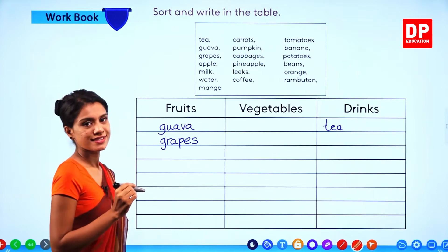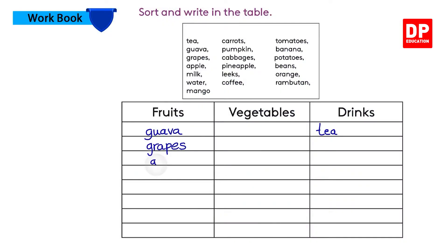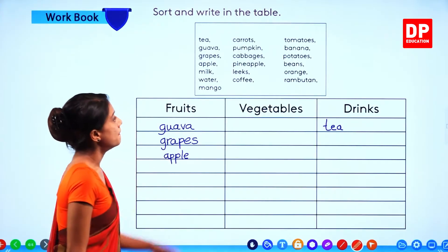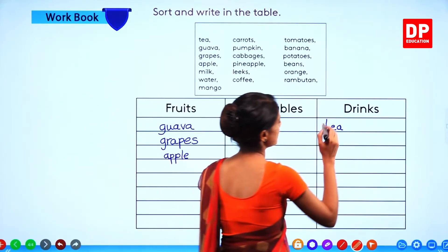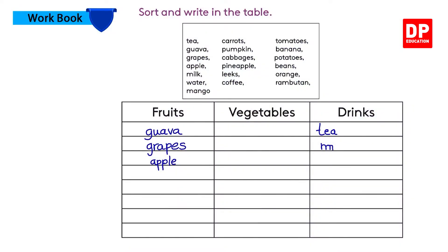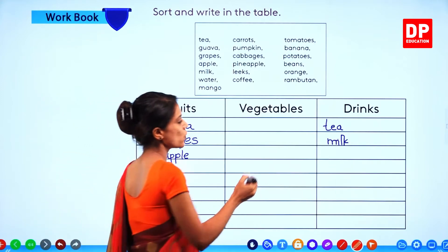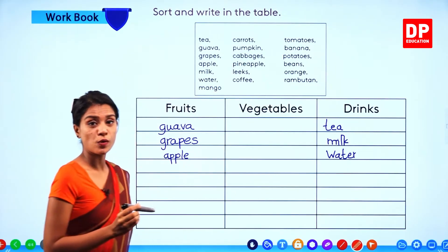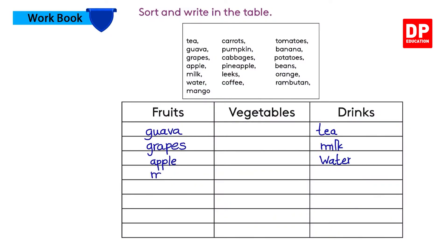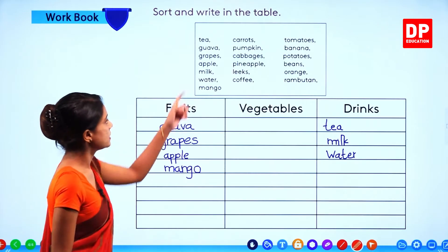Apple — apple is a fruit. Apple. Then milk. Milk — paal. Is it a fruit or vegetable? No. It's a drink. Right. Very good. Then water — drink plenty of water. Thanir. It's a drink. Right. Then mango. Mango is a fruit — maam palam. Mango.